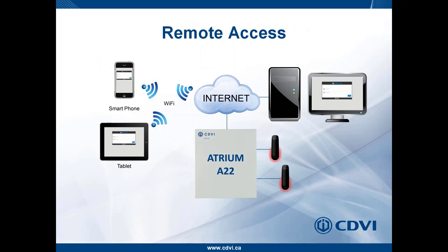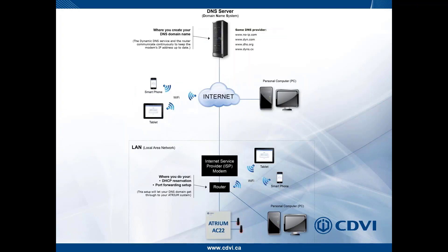A very popular and important request from end users is remote connectivity — connecting to the system when not at the office or on the local area network, to unlock a door, delete a card, or add a card. This can be done with the Atrium system by going through the internet and connecting to the Atrium A22 remotely — the same concept used with remote camera systems.